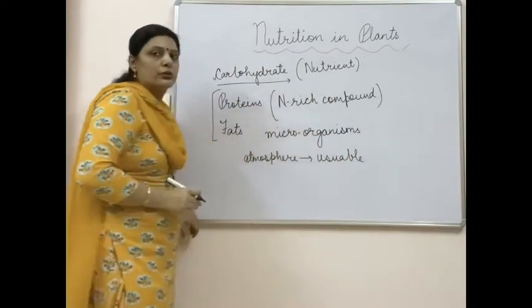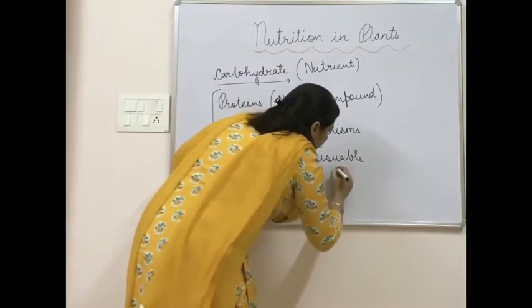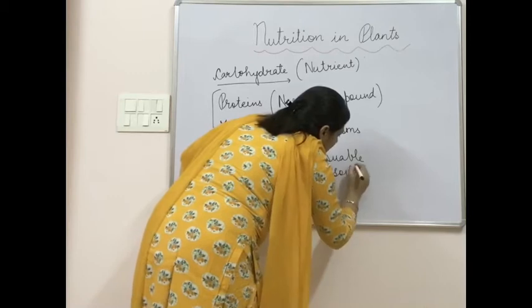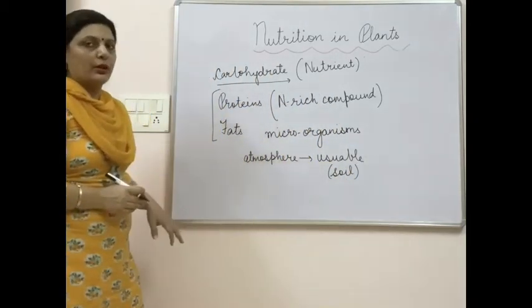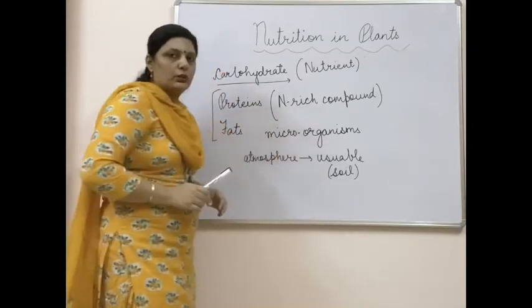When this usable form is present in soil, it can be taken up by plants through the roots. When water and minerals are taken up, this usable form of nitrogen is also taken up by the plants.